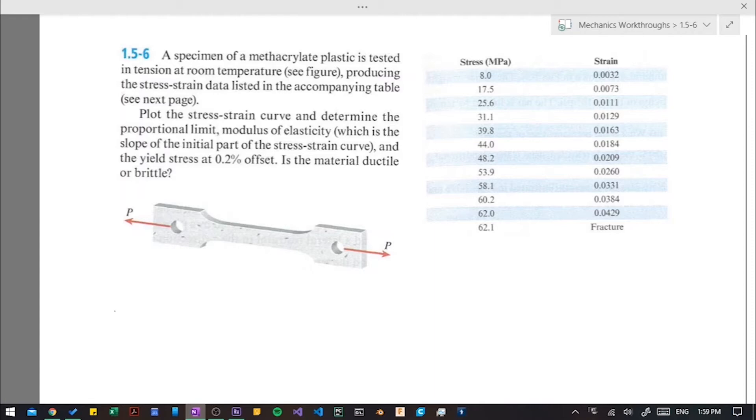Plot the stress strain curve and determine the proportional limit, modulus of elasticity, which is the slope of the initial part of the stress strain curve, and the yield stress at 0.2% offset. Is the material ductile or brittle?